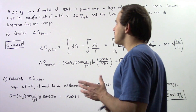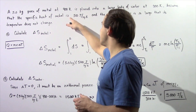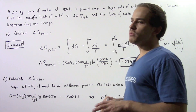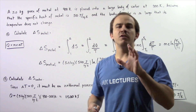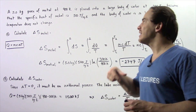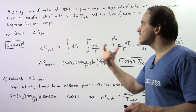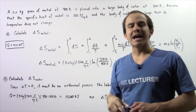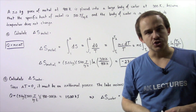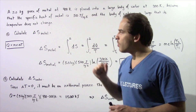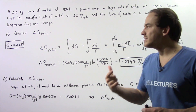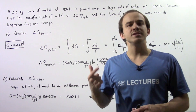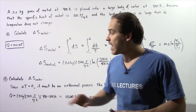Assume that the specific heat of the metal is 500 joules per kilogram times Kelvin, and assume that the body of water is so large that when we place that metal into the water, the temperature does not actually change. Let's begin with part A, in which we want to calculate the change in entropy of the system — our metal.